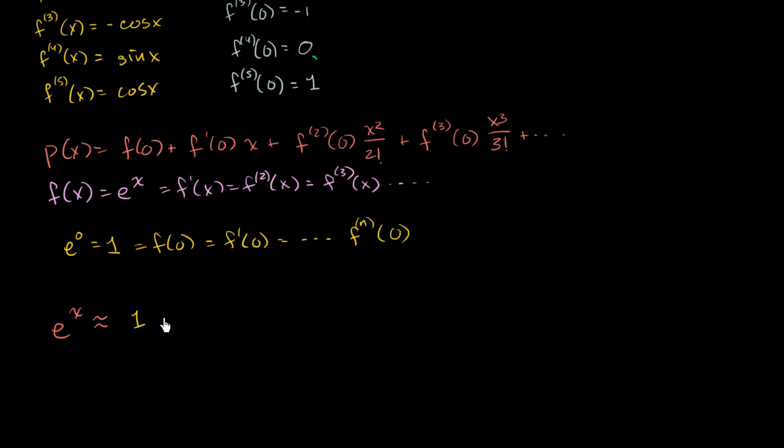So f of 0 is 1 plus f prime of 0 times x. f prime of 0 is also 1. So plus x, plus this is also 1. So it's going to be x squared over 2 factorial. So plus x squared over 2 factorial.